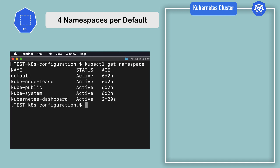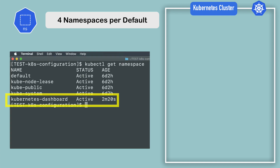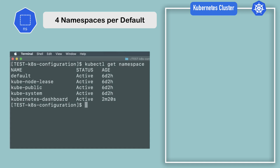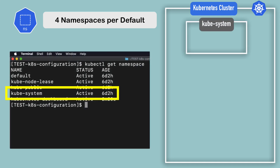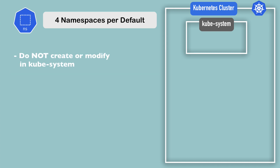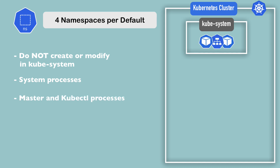Let's go through them one by one. The Kubernetes dashboard namespace is shipped automatically in Minikube, so it's specific to a Minikube installation — you will not have this in a standard cluster. The first one is kube-system. The kube-system namespace is not meant for your use; you shouldn't create or modify anything in it. The components deployed there are system processes from master managing processes or kubectl, etc.